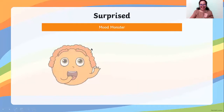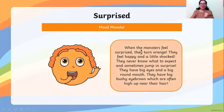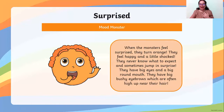Surprised — when the monsters feel surprised, they turn orange. They feel happy and a little shocked. They never know what to expect and sometimes jump in surprise — that is very natural. They have big eyes and a big round mouth, with big bushy eyebrows often high up near their hair. Your eyes turn round and your mouth will also be round.